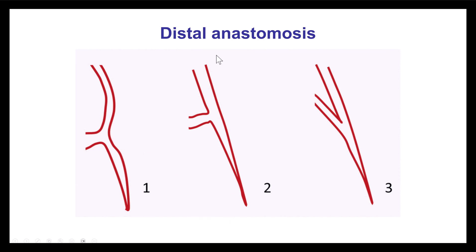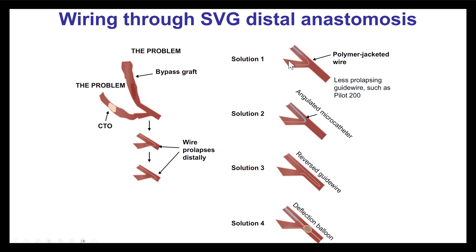These are some of the potential challenges with the distal anastomosis. Sometimes the angle is favorable and it's easy to cross retrograde, but sometimes the angle can be acute and going retrograde can be much more challenging. To overcome this, various solutions exist: one is to use a polymer-jacketed wire — specifically the Pilot 200, which has less tendency to prolapse. The second is to use an angulated microcatheter such as the Supercross, Shaping, or Venture. The third is to use the reversed guide wire technique. The fourth is to use a deflection balloon inflated just distal to the vein graft touchdown to deflect the guide wire retrograde.